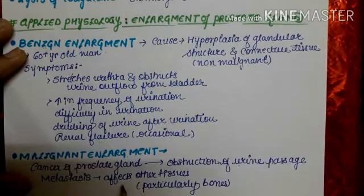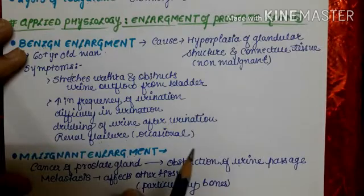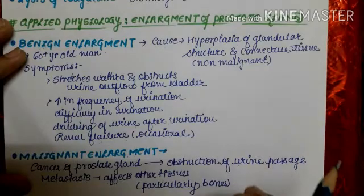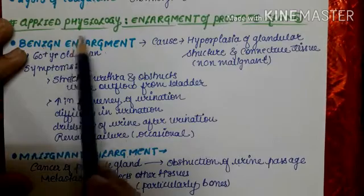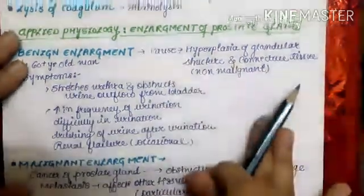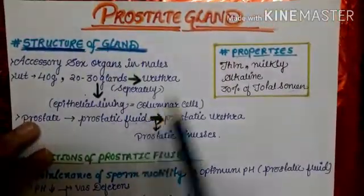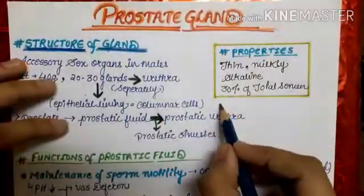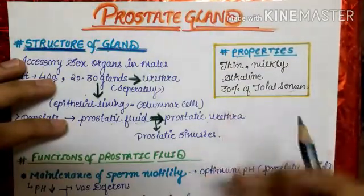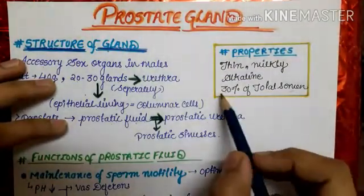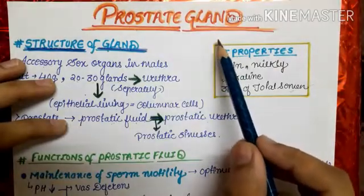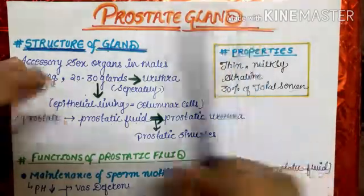Malignant enlargement of the prostate can affect other tissues, particularly bone. This concludes the topic of the prostate gland. Notes are available on Instagram with links in the description. Please subscribe to the channel — thank you for watching.